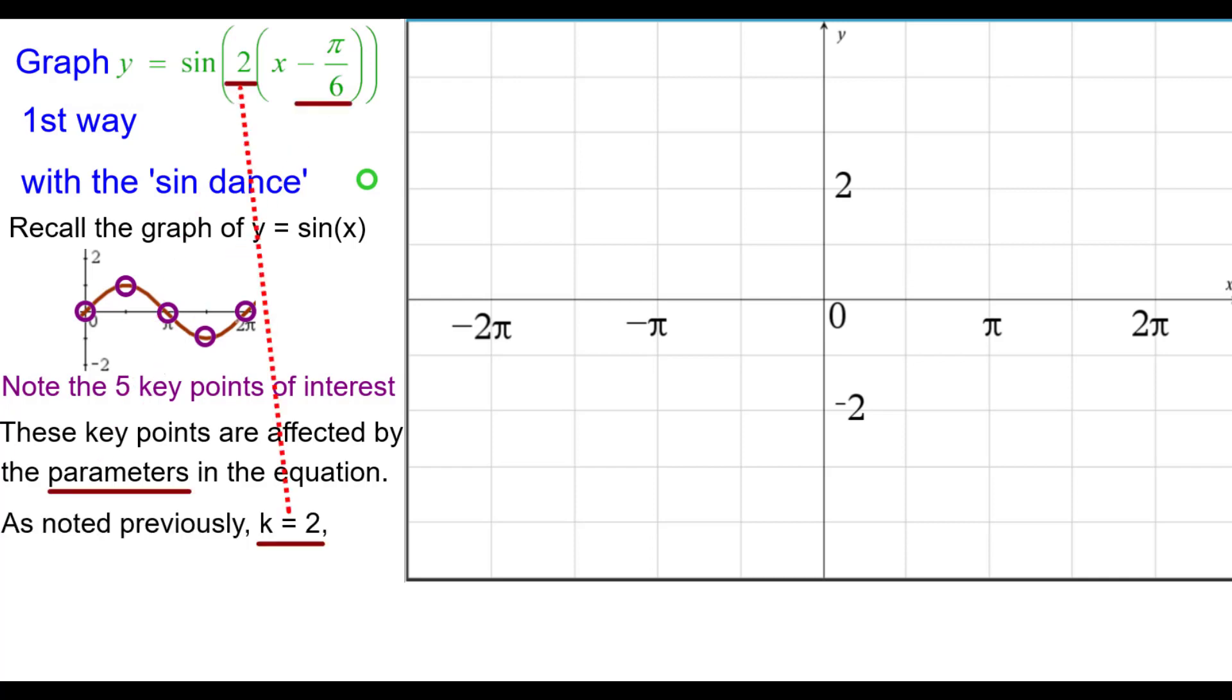As noted previously, what we call k is equal to 2, and that affects the period inversely. That is, the period is 2 pi times the reciprocal of k, which in this case would be 2 pi times 1 half, which is pi.